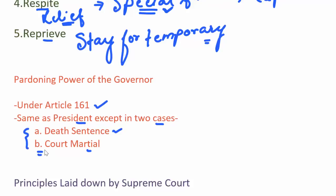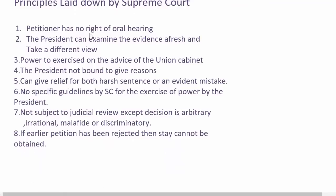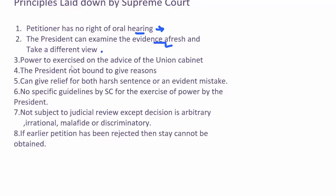There are certain principles also laid down by the Supreme Court. First, the petitioner has no right of oral hearing. Since the President's pardoning power is an executive action and he does not sit as a court of appeal, the petitioner also does not have the right to an oral hearing. Second, the President can examine the evidence afresh and take a different view from the court. Third, the power is to be exercised on the advice of the Union Cabinet, which means the power of the President is not absolute. Fourth, the President is not bound to give reasons why he has given or not given a pardon.